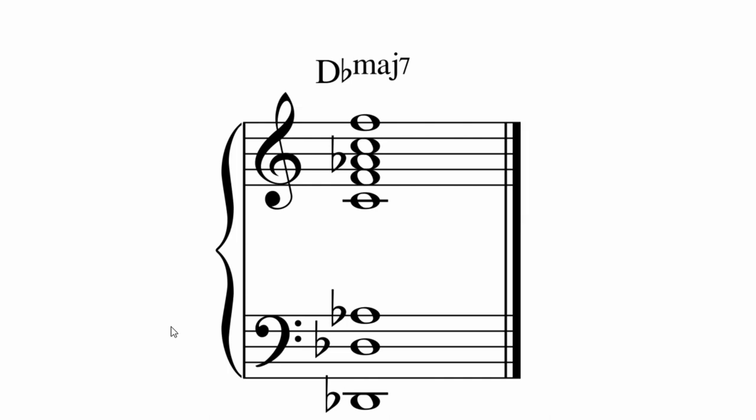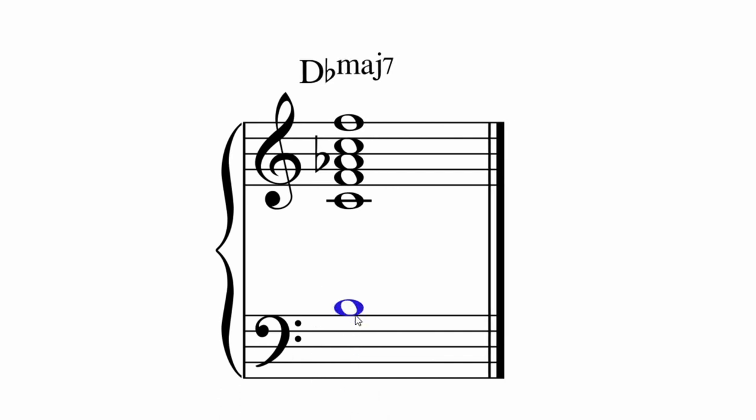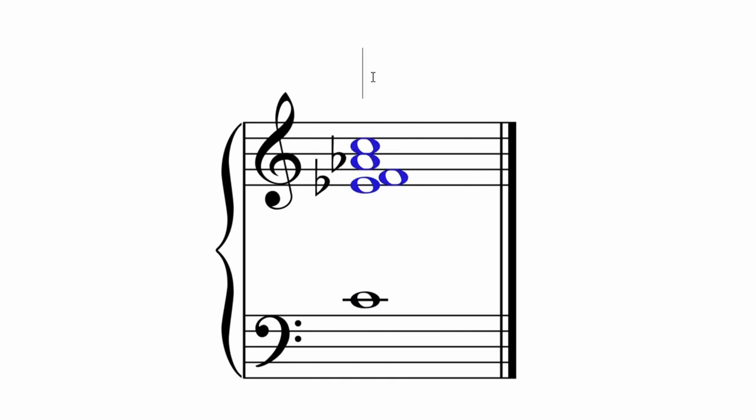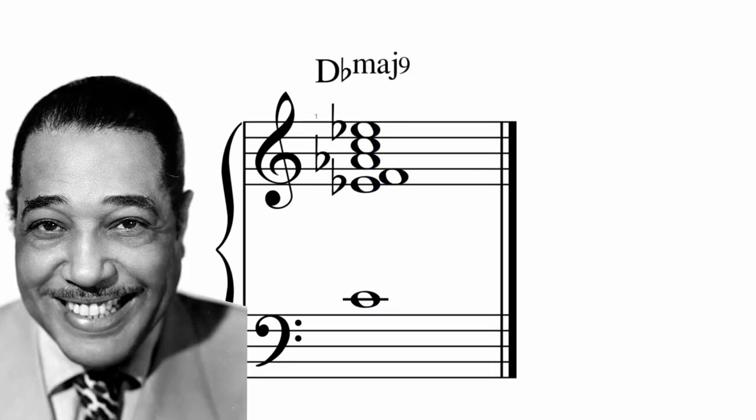Depending on how solid you want the chord to sound, you could omit the root. Here's a voicing from Duke Ellington's Isfahan. It's a D-flat major nine.